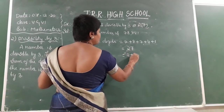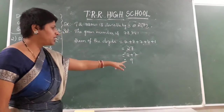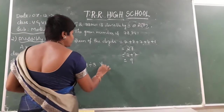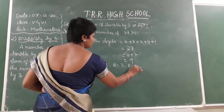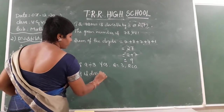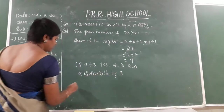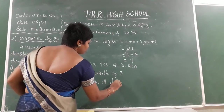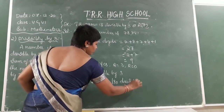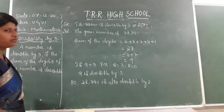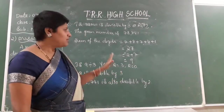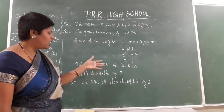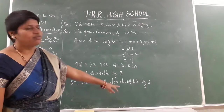Now I add the digits of 27: 2 + 7 = 9. Is 9 divisible by 3? Yes — quotient is 3, remainder is 0. So when 9 is divisible by 3, the entire number 78,741 is also divisible by 3. See how simple it is — I am not doing any division process. I simply added the digits of the given number and checked whether the sum is divisible by 3. Since it is, the whole number is also divisible by 3.